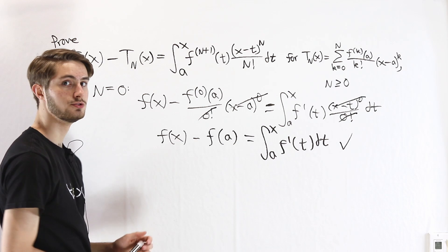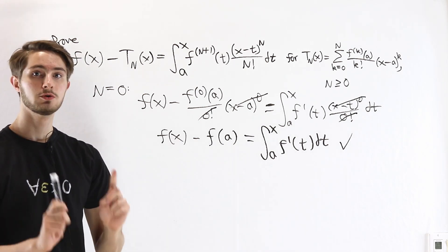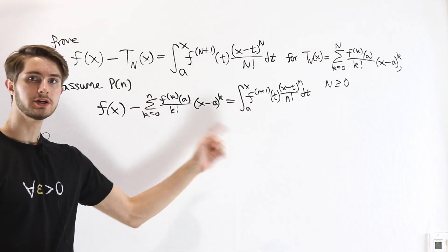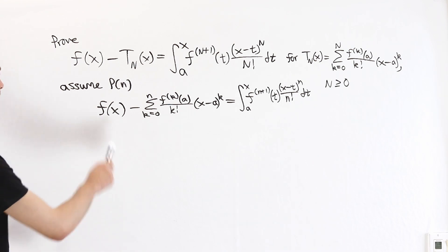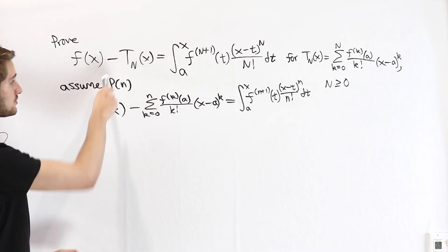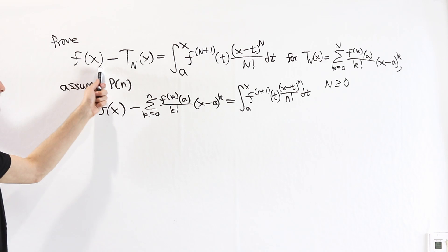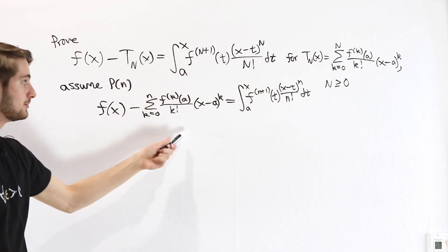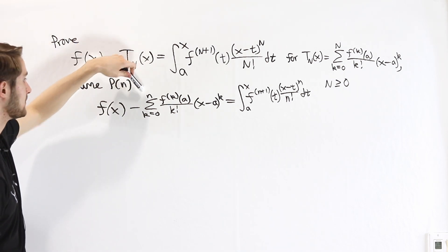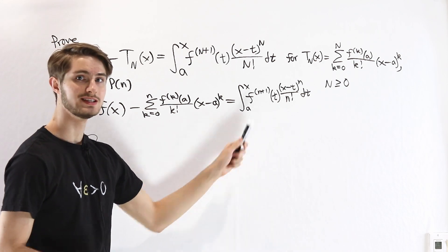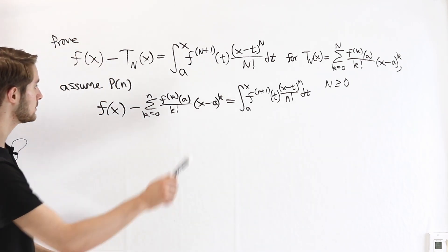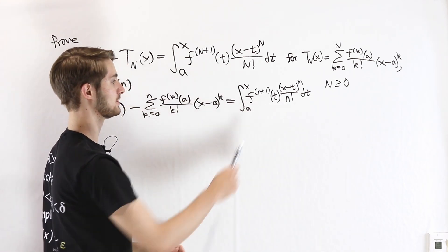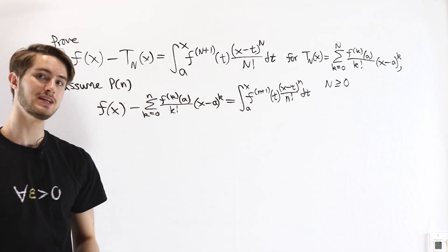Since that's equivalent to our formulation of the n=0 case, we have proved the base case. Now it's time for the inductive step. We assume the proposition is true for some value n — taking this expression, substituting the nth order Taylor polynomial sum in, with our n. We want to get from this equation to the exact same thing, except everywhere we have an n, we see an n+1. To do that, we start on the right side with this integral and perform an integration by parts.